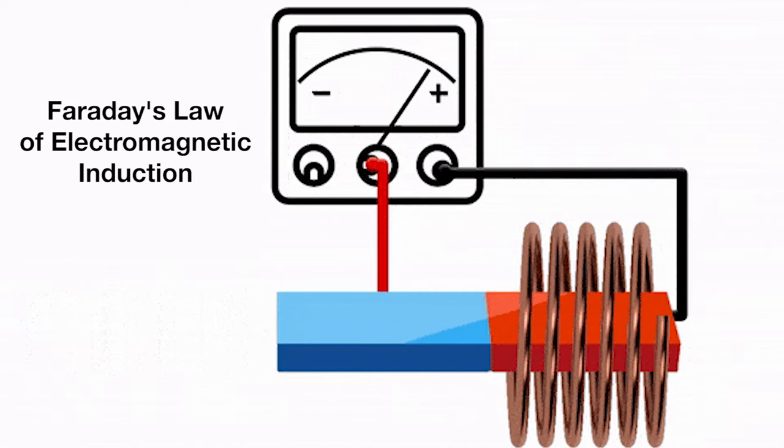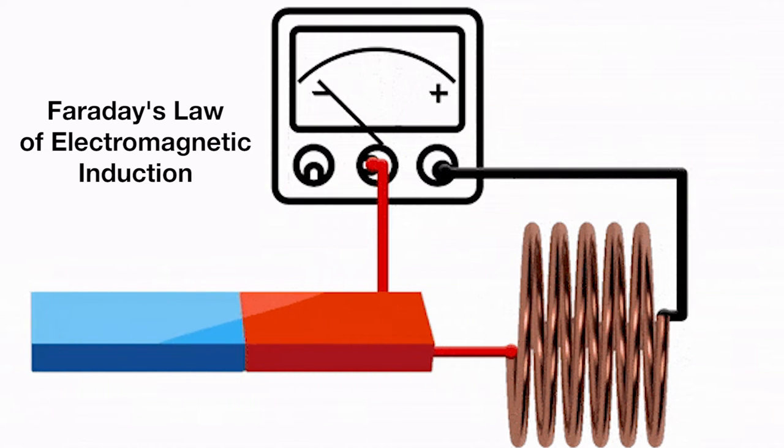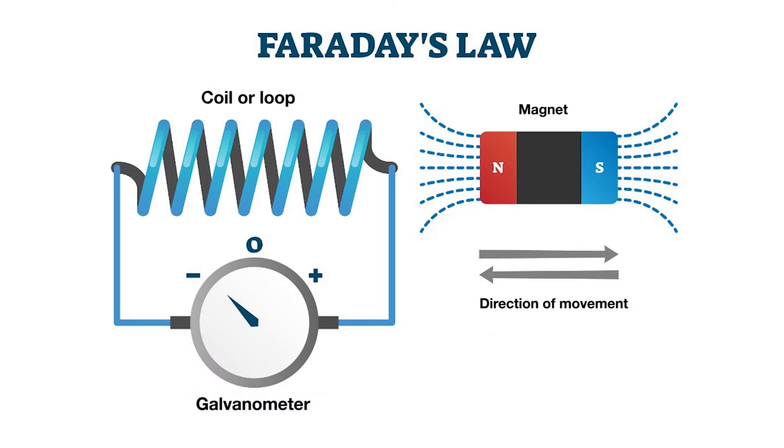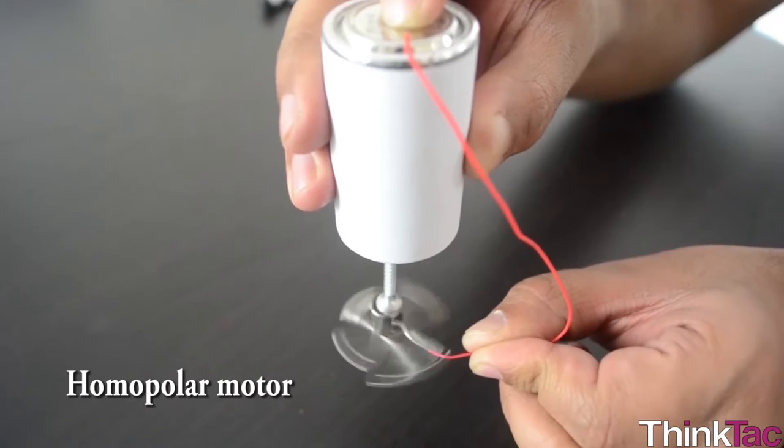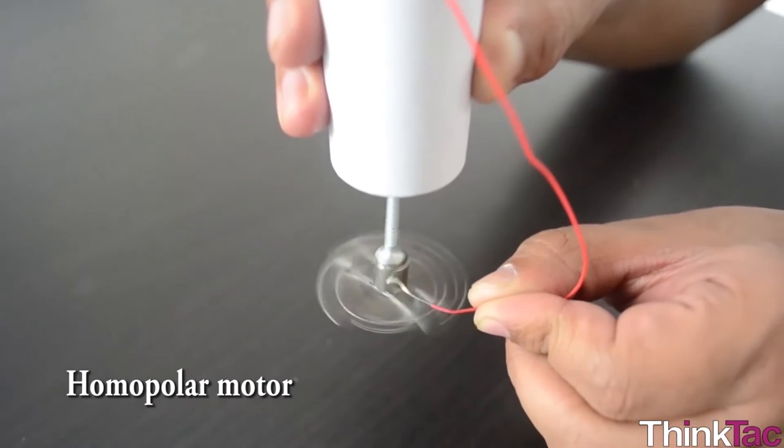Note that Faraday's law of electromagnetic induction is just the inverse of this process and was postulated by the English scientist soon after Ørsted's discovery in 1821. Faraday was also the first person to build a motor, called a homopolar motor, in the same year.